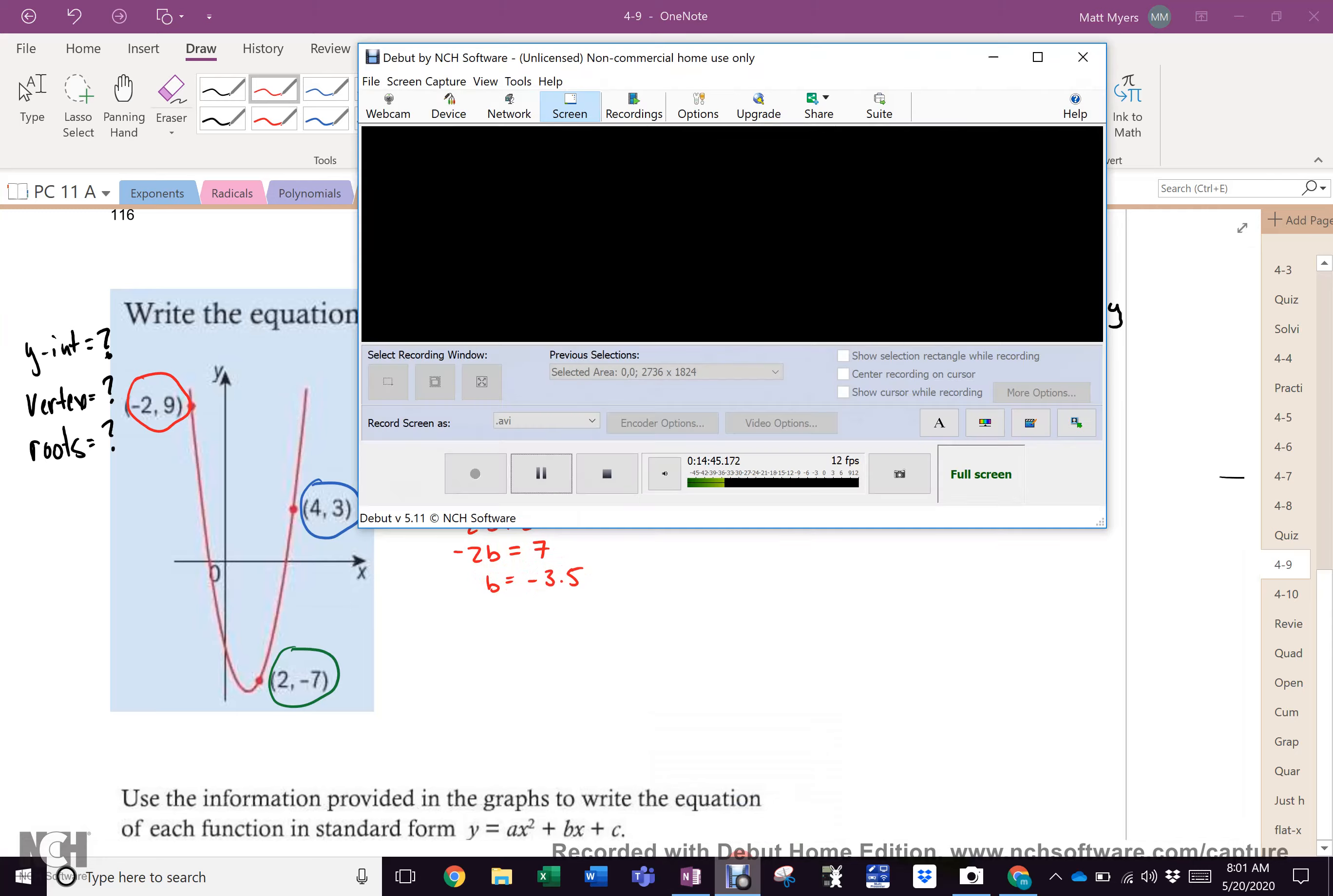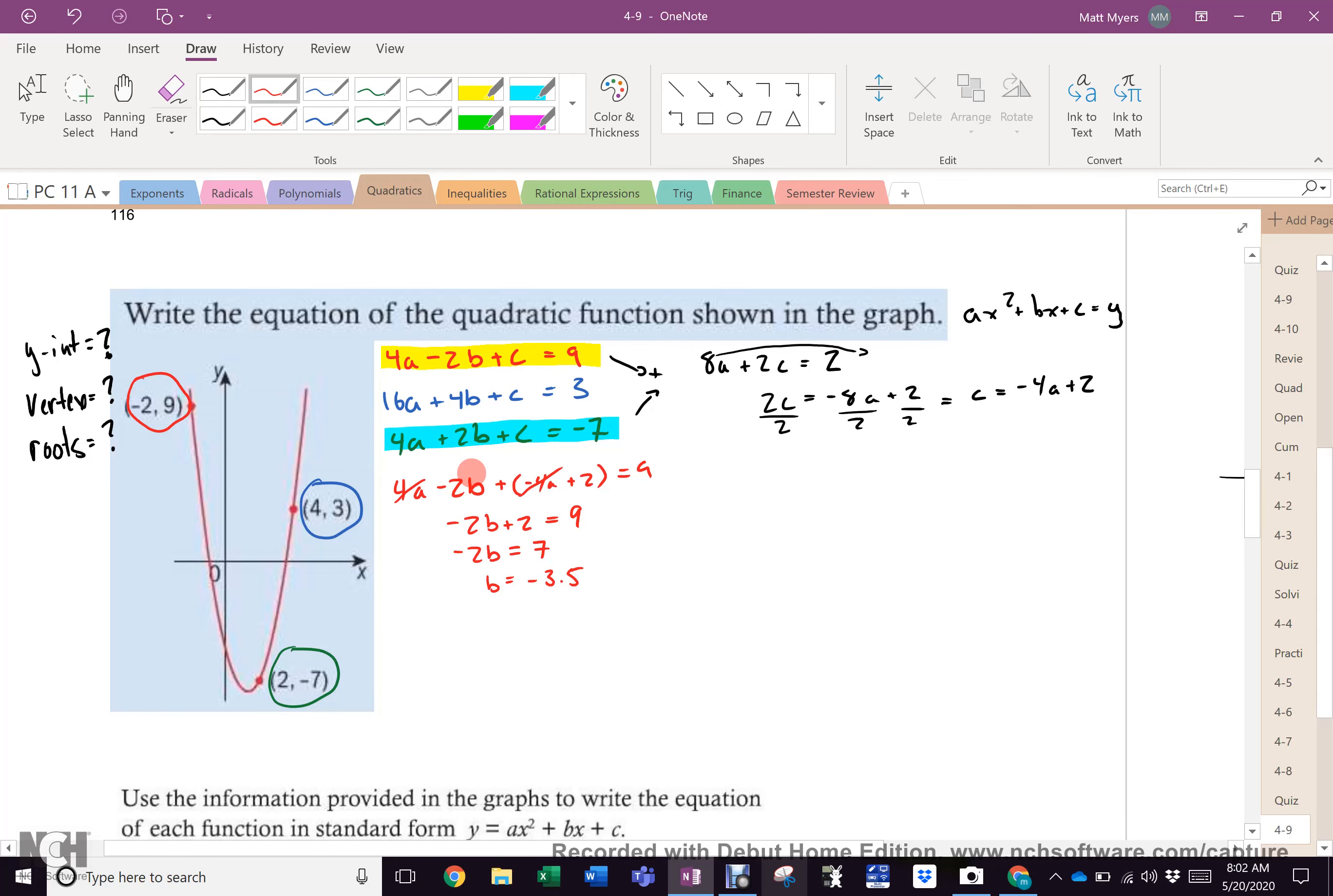Excuse me one moment. Something's going on here. Okay. I'm back. There was some hassle in the kitchen. -4. So, now I have b equals -4. So, now I can choose any equation I want.